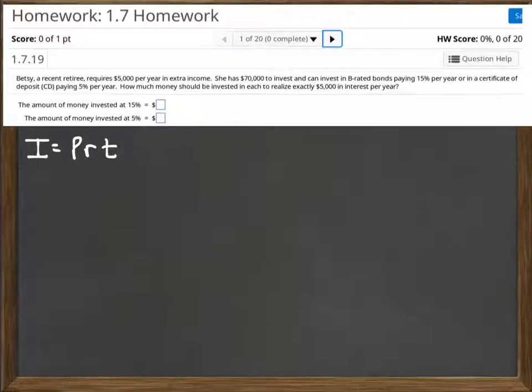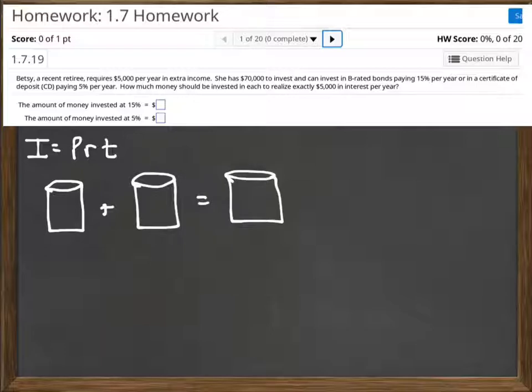So this is an interest problem. It's kind of like a mixture problem. So I actually use the same kind of setup to do most interest problems as we do mixture problems. Across each of the boxes here, I'm going to label. I have a 15% interest rate on my B-rated bonds, so I'm going to label that as 15%. And I have 5% on my CD, so I'm going to label that one.